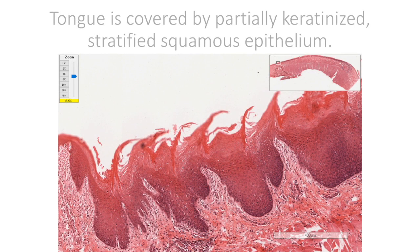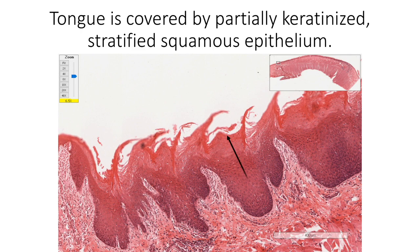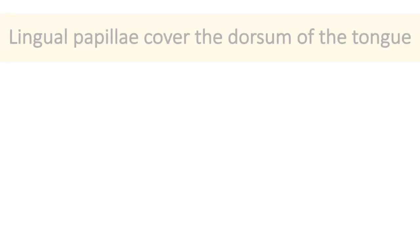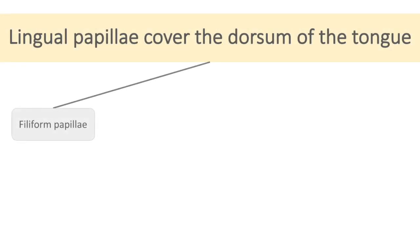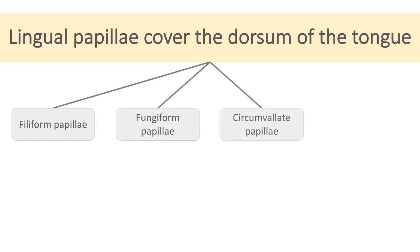The covering epithelium is partially keratinized stratified squamous epithelium. On the dorsal surface, this epithelium shows multiple lingual papillae. They are mainly of four types: filiform papillae, fungiform papillae, circumvallate papillae, and foliate papillae.